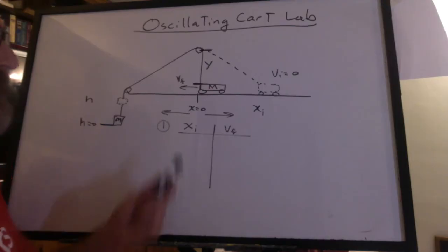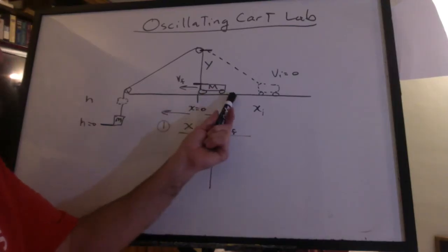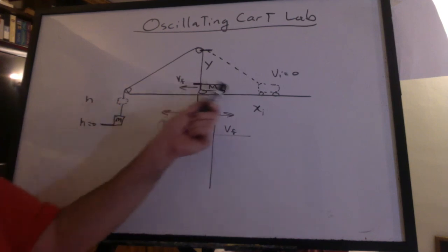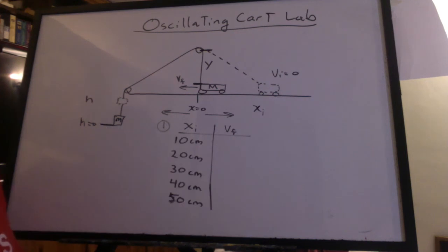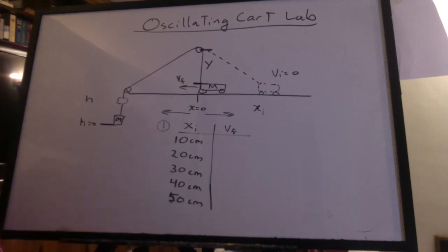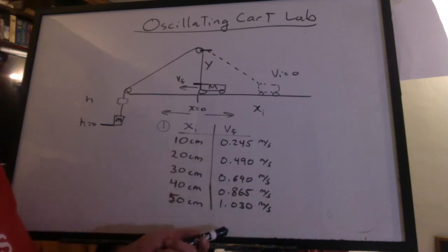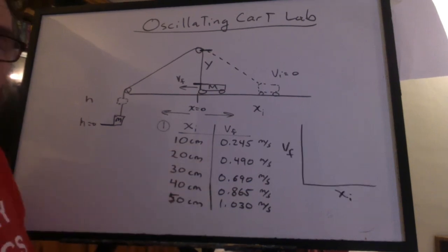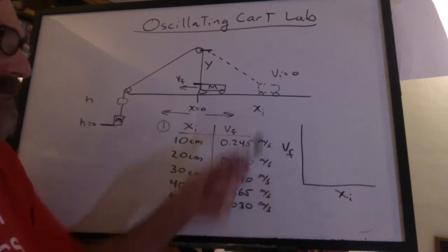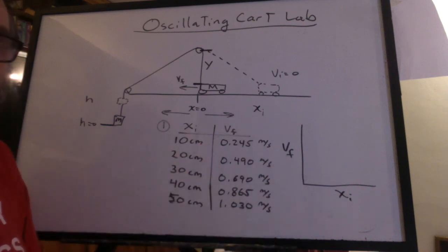So first make sure the geometry check works out. We pulled it back 20 centimeters and the weight rose according to the meter stick and you should make sure you can do that math. And in part one of the experiment we pulled the cart back and release it from rest at 10, 20, 30, 40, and 50 centimeters. And we got these velocities. You should make a graph of the velocity final versus the x initial both experimentally and theoretically.